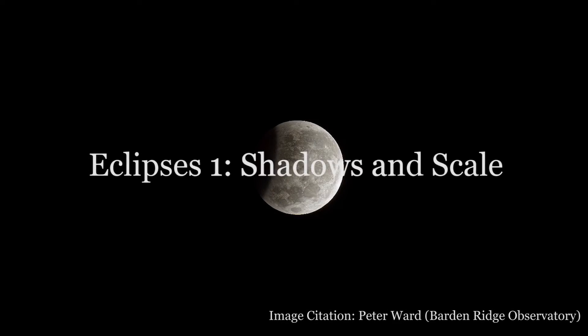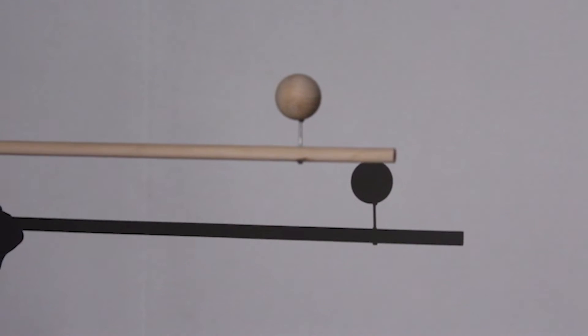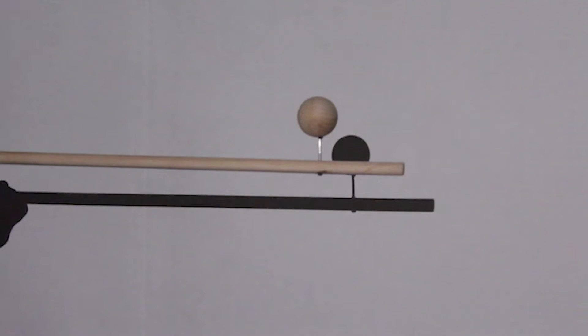This is the first in a series of videos focusing on eclipses. Let us first consider the shadow an object casts due to a point source. Because the light comes from only one point, the shadow's edges are sharply defined.